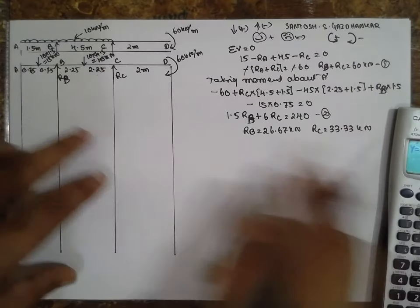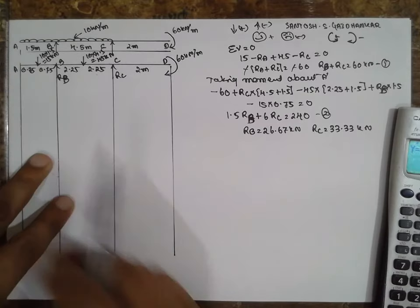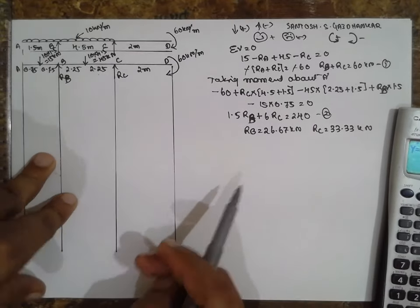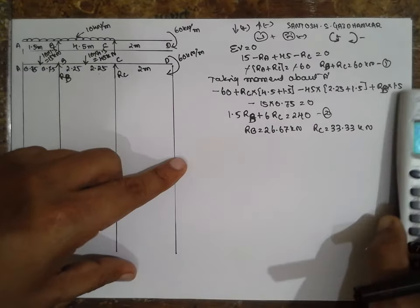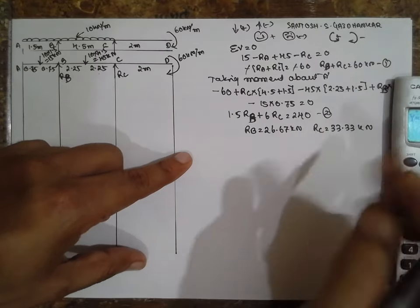There are two overhanging ends — this side is also hanging, and this side is also not hanging. Therefore two values come into picture; you have to go for equating.